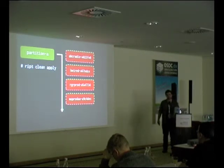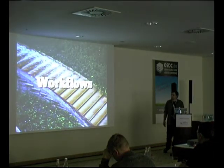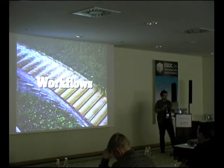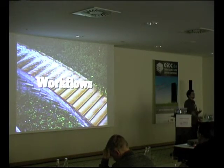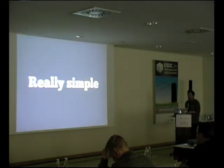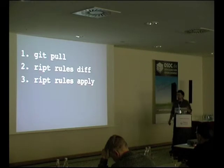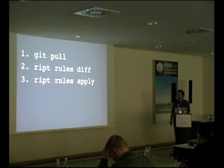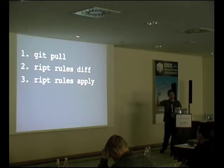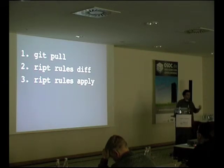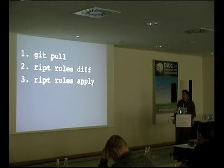The ordering of pointer rules is really, really important. In day-to-day use, there are only two or three core things happening when making rule changes: you do a git pull to get the latest rules, a diff to see what's going to change — like no-op mode in Puppet — and then an apply.